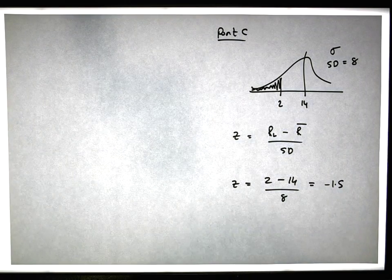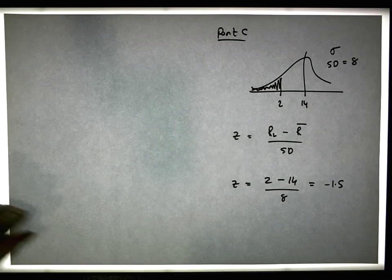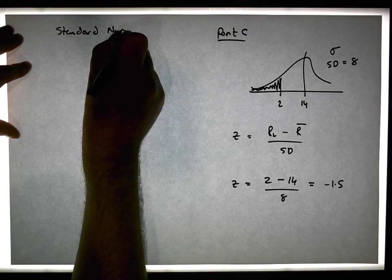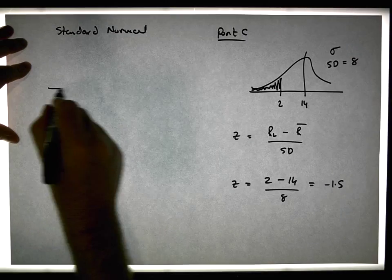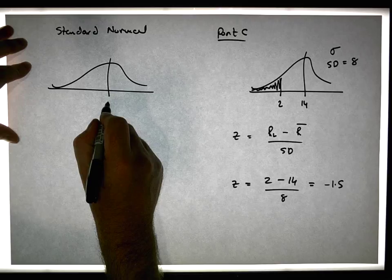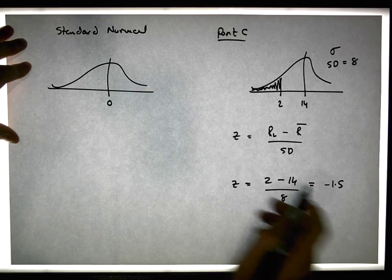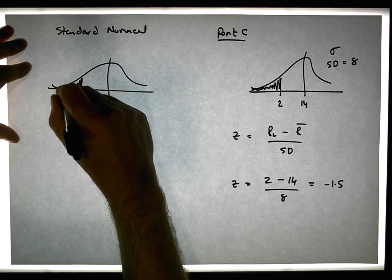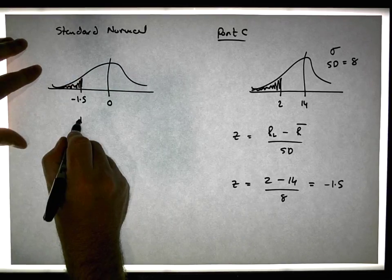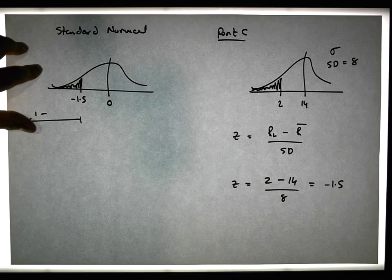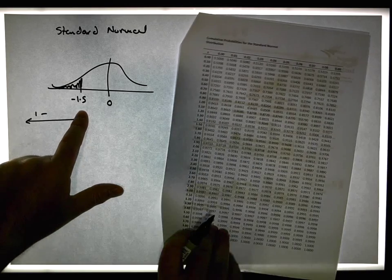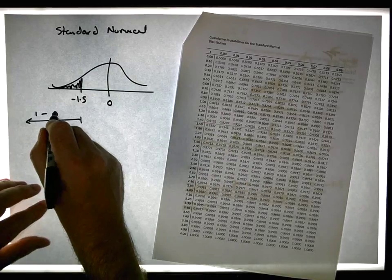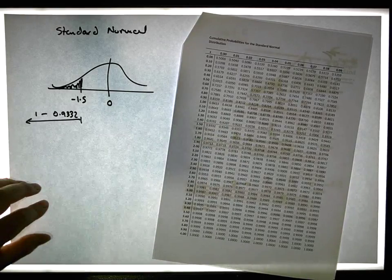So now from a standard normal perspective, the curve is centered on zero because we standardized. 2 goes to minus 1.5, and the question is what's the area over here? That's a tail area, so I need to take something away from 1. I'm going to look up 1.5 on my tables. When I look up 1.5 on my tables, I get 0.9332.